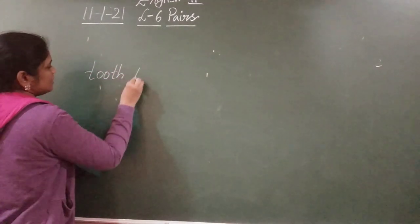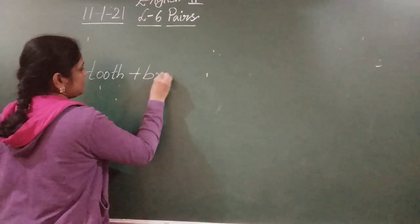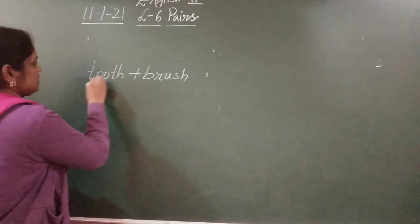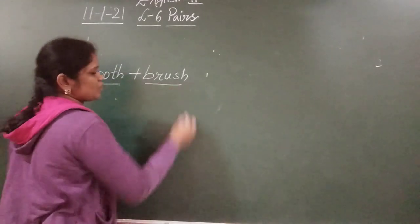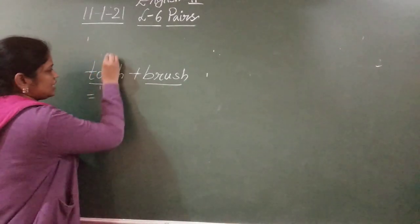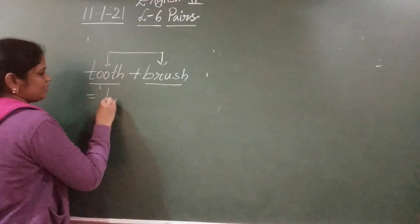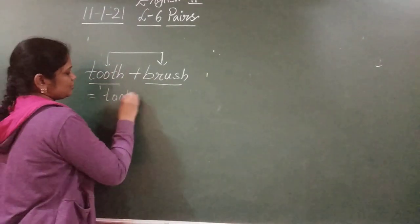For example, tooth plus brush. Tooth is one naming word, brush is one naming word. See children, combine these two, what will come? The naming word will come, toothbrush.